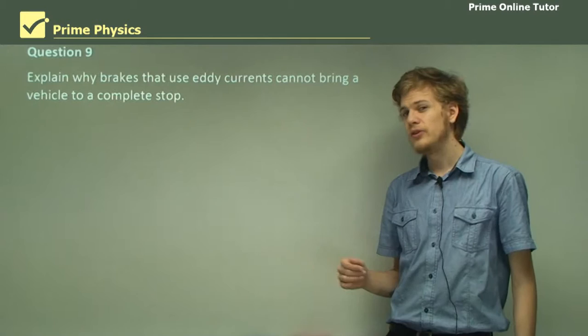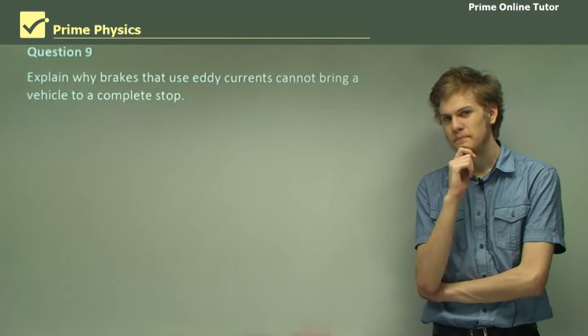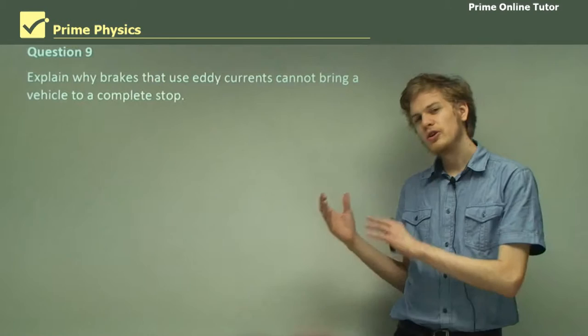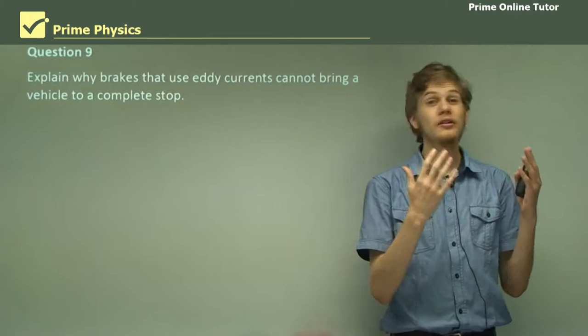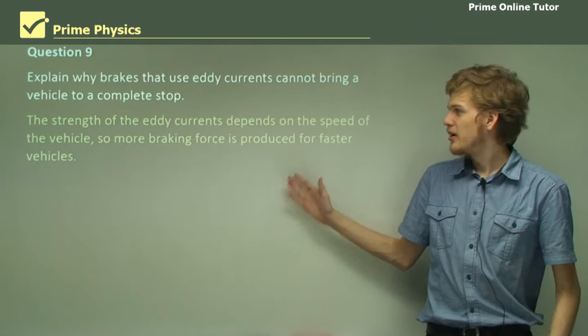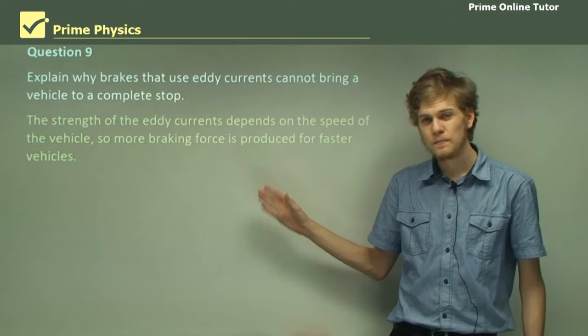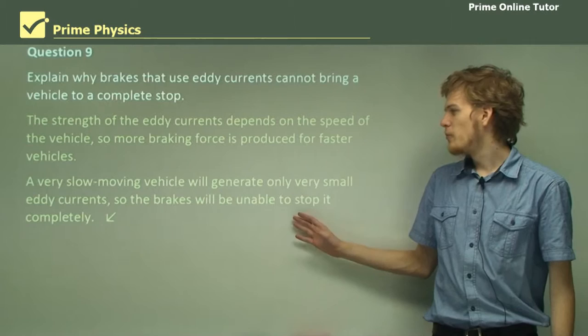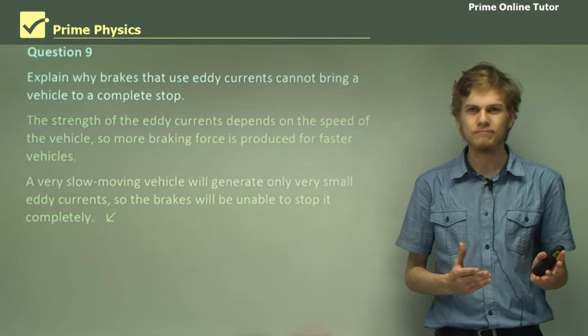Question 9: Explain why brakes that use eddy currents cannot bring a vehicle to a complete stop. The strength of the force produced by eddy currents is proportional to the rate of change of magnetic field, which depends on how quickly the vehicle is moving or how fast the wheels are turning. So the strength of the eddy currents depends on the speed of the vehicle — more braking force is produced for faster vehicles. At very slow speeds, there will be almost no braking force, which means electromagnetic brakes cannot stop the vehicle from moving completely.